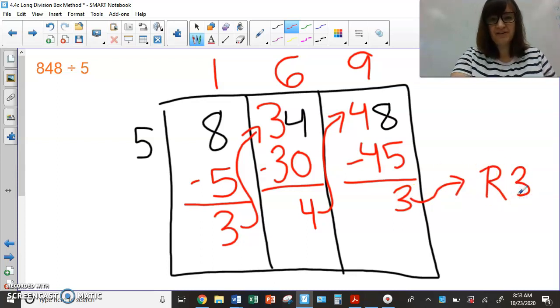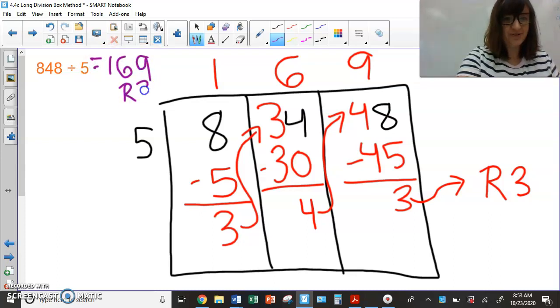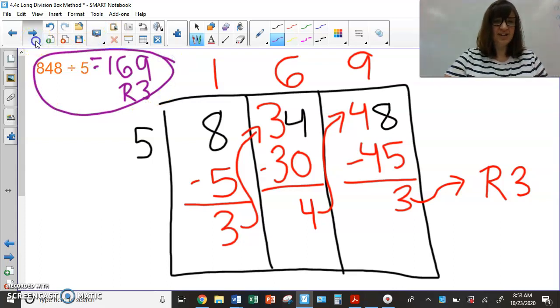So your final answer are these digits at the top. This is the hundredths place. This is the tens place. This is the ones place, because that's what places these were. So your final answer to 848 divided by five is equal to 169 remainder three. Let's do another one.